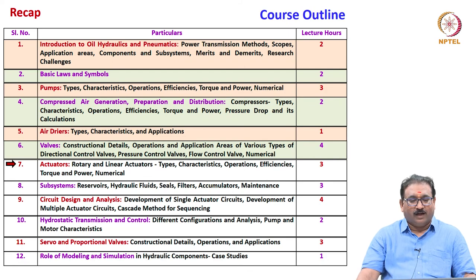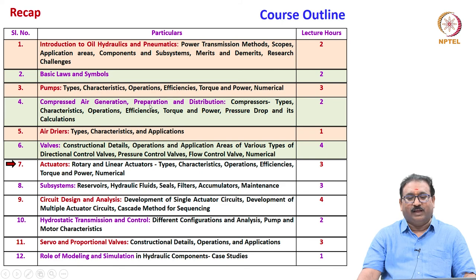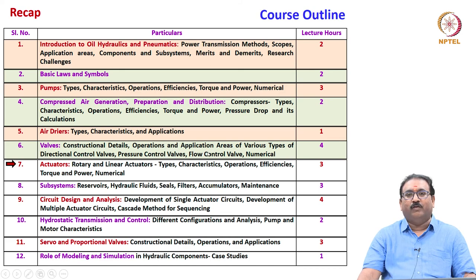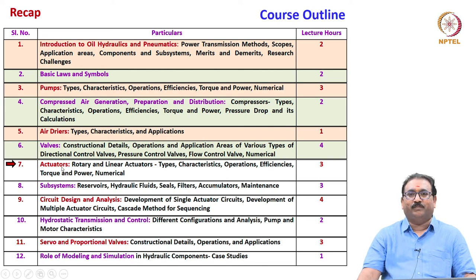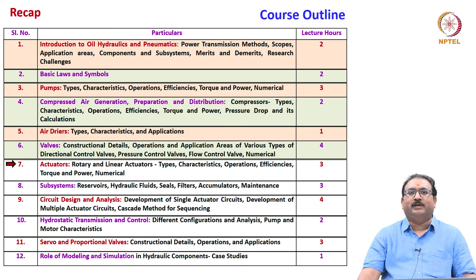We have already covered serial numbers 1 through 6, which involve introduction to oil hydraulics and pneumatics, basic laws and symbols, pumps, compressed air generation, preparation and distribution systems, air dryers, and valves — including direction control valves, pressure control valves, and flow control valves. Today we are at serial number 7: actuators. Here we will spend around 3 lecture hours to discuss various rotary and linear actuators, and also work through some simple numericals to estimate key parameters.